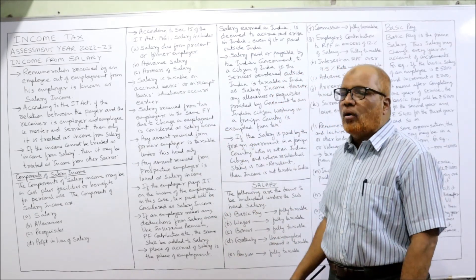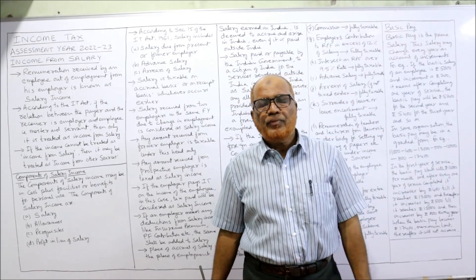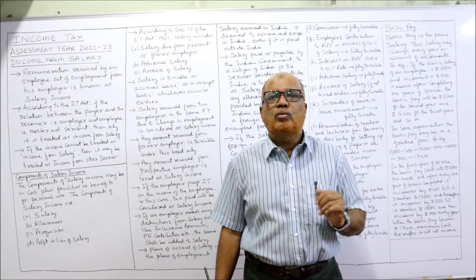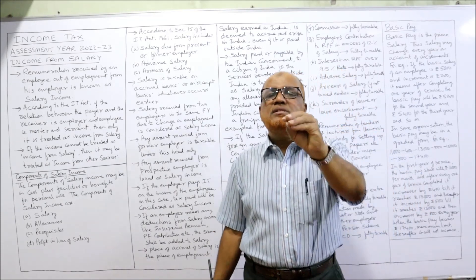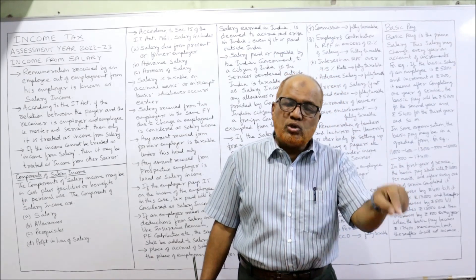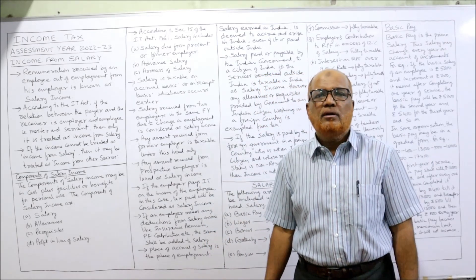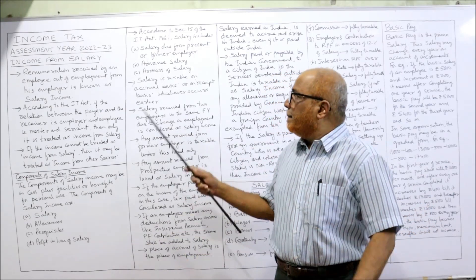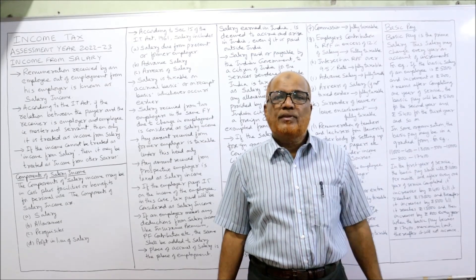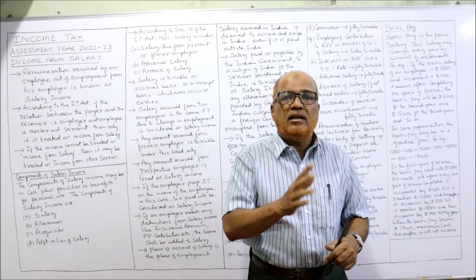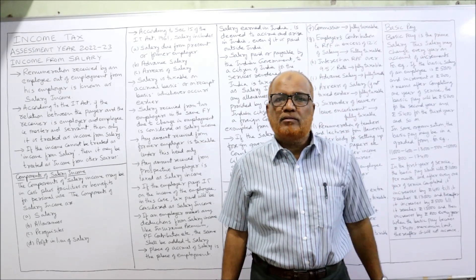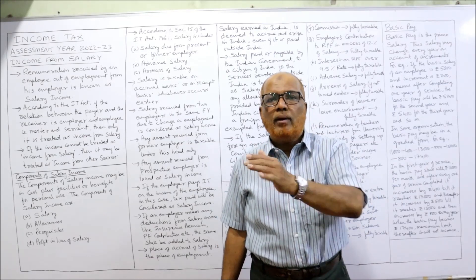Salary is taxable on accrual or receipt basis, whichever appears earlier. If accrual appears earlier, it will be taxable. If receipt appears earlier, it will be taxable. For example, during the current year, 10 months salary paid and 2 months salary accrued but not paid — that 2 months will also be included in salary income. Similarly, received but not accrued: if the salary received is for 15 months — 12 months for current year plus 3 months advanced salary for next year — income tax says tax will be applied on all 15 months.